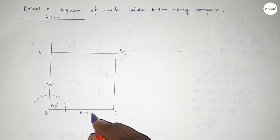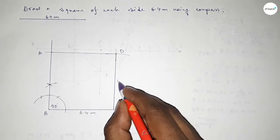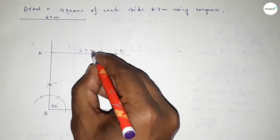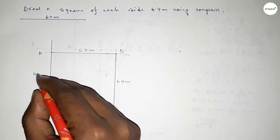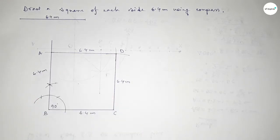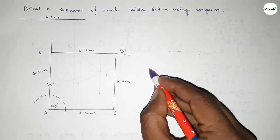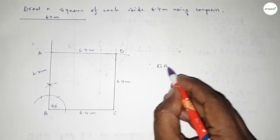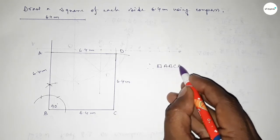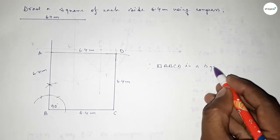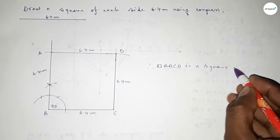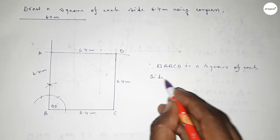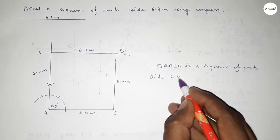Taking here point A and here D. This side 6.4 centimeters, this side 6.4 centimeters, this side 6.4 centimeters, this side 6.4 centimeters. Therefore ABCD is a square of each side 6.4 centimeters.